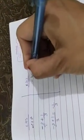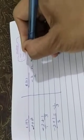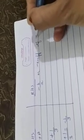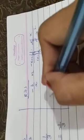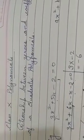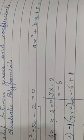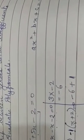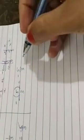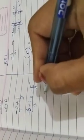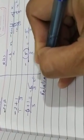Now the right-hand side is -b/a, that is, minus the coefficient of x upon the coefficient of x². From the equation, b is +5 and a is 3, so this becomes -5/3. Here on the left-hand side we got -5/3 and on the right-hand side we also got -5/3. Hence the relation is verified.